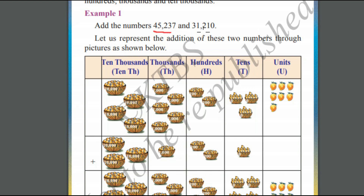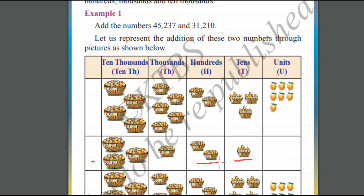Now let us see 31,210. We follow the same representation for this number as well. In the units place, we have got 0 mangoes. In the tens place, we have got 10 mangoes. In the hundreds place, we have got 200 mangoes. In the thousands place, we have got 1,000 mangoes — there is only one basket. In the ten-thousands place, we have got 3 baskets of mangoes, that is 30,000 mangoes.